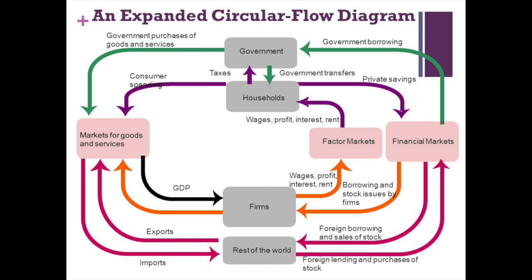Households are any consumers, so it doesn't necessarily have to be your traditional house — it can be anyone purchasing goods and services. Markets for goods and services is any place that you can buy the products or services produced by the firm, which would include everything from a grocery store to amazon.com. The factor market is where the four factors are bought and sold, which includes labor, land, capital, and entrepreneurship.